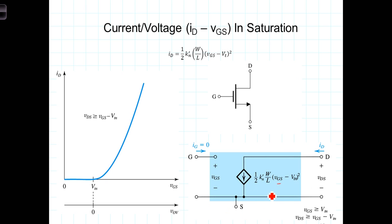This model here is known as the large signal model for the field-effect transistor, and it clearly demonstrates the relationship of ID, the current flowing into the transistor, as a function of VGS.